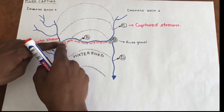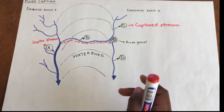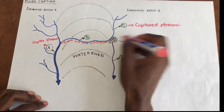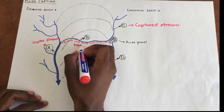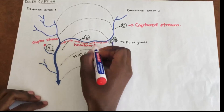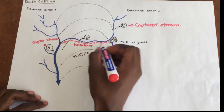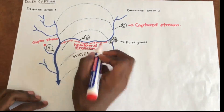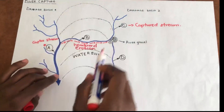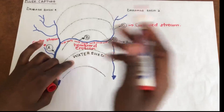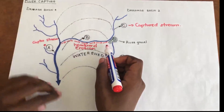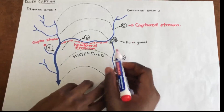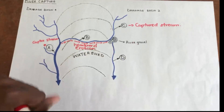What stops the water from flowing downstream in the original direction? It is because of the headward erosion that was occurring — the formation of stream B was caused by headward erosion. This headward erosion occurred along and through the watershed into the different drainage basin until it arrived at the river in that different drainage basin.